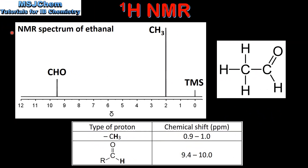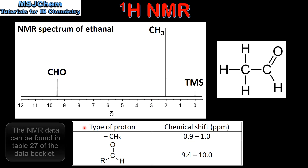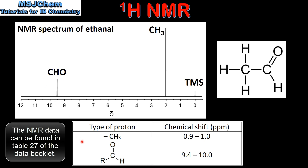Next we look at the NMR spectrum of ethanal in more detail. On this spectrum we have two peaks. The area under each peak corresponds to the number of hydrogen atoms in that chemical environment. By using the data from the data booklet we can identify the type of proton from its chemical shift. For example, we have a peak here at around 9.5 ppm which corresponds to the hydrogen atom in an aldehyde group.